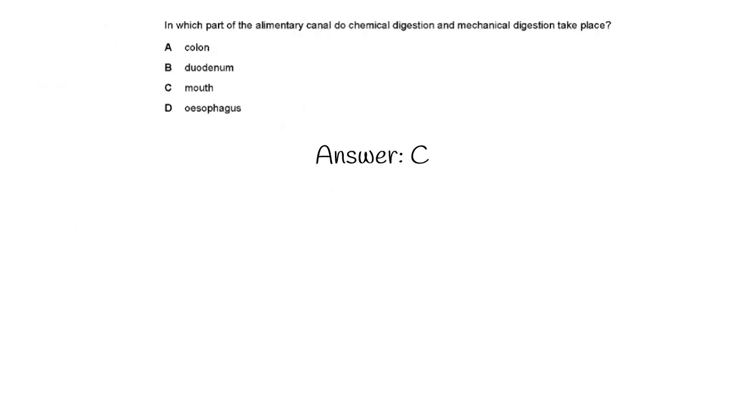Fourth question here, in which part of the alimentary canal do chemical digestion and mechanical digestion take place? The answer here was C. In the mouth, you have the teeth that mechanically breaks apart food into smaller pieces. And you also have amylase, which is an enzyme, as we talked about, in saliva, that chemically breaks apart starch into maltose.